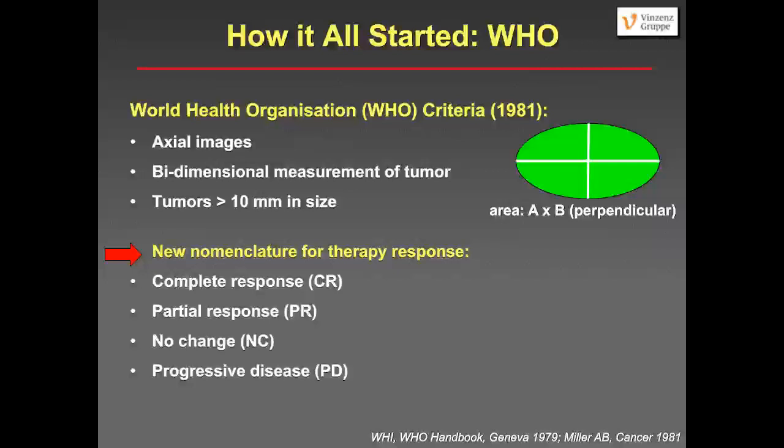Basically you would measure perpendicular A and B, then multiply to get an area. The World Health Organization introduced a new nomenclature for therapy response: complete response if all the tumors disappear; partial response; no change; and progressive disease if the tumor gets bigger and new tumors appear. This was quite revolutionary at that time.